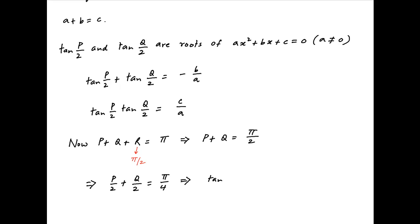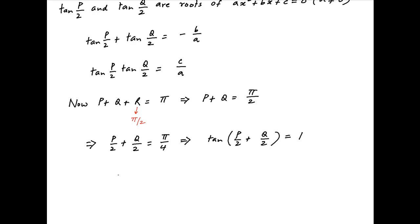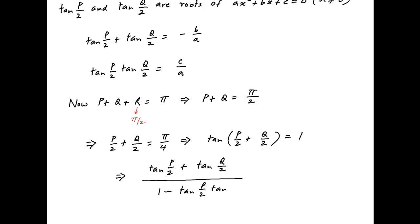Taking the tangent of both sides, tan(p/2 + q/2) = tan(π/4) = 1. Expanding using the addition formula: tan(p/2 + q/2) = [tan(p/2) + tan(q/2)] / [1 − tan(p/2)·tan(q/2)], and this equals 1.